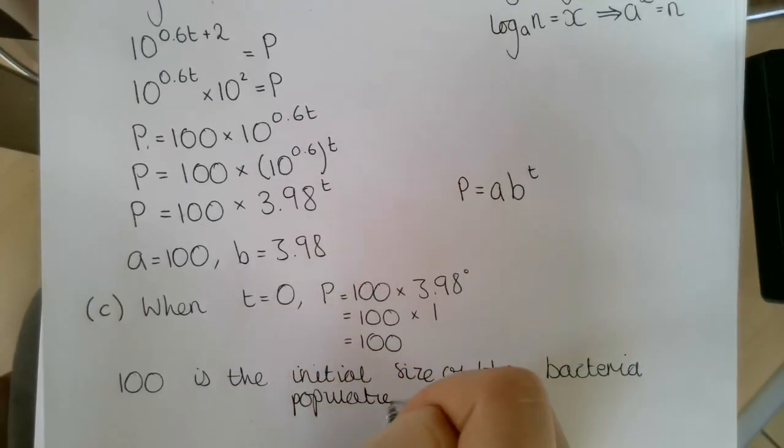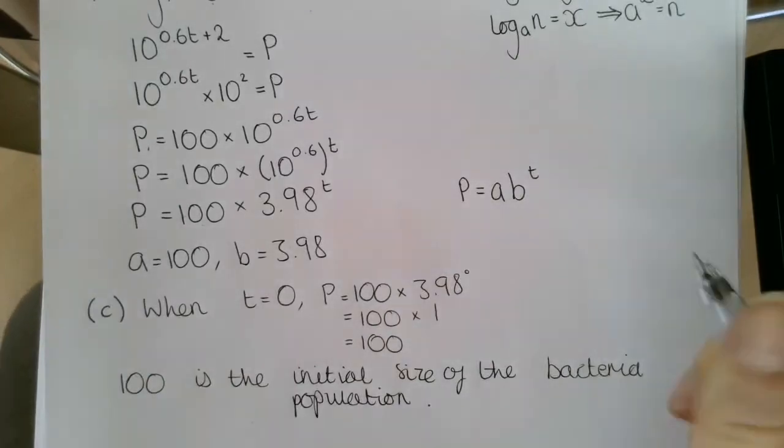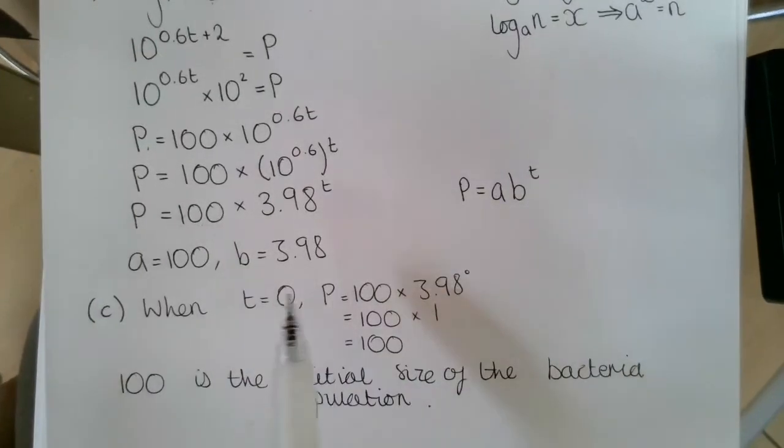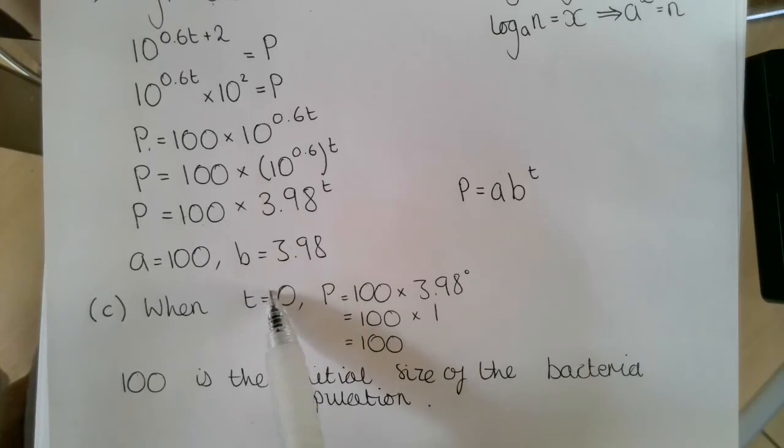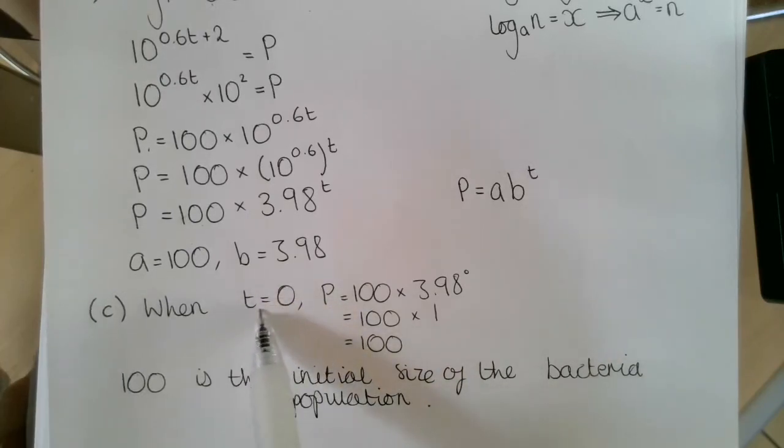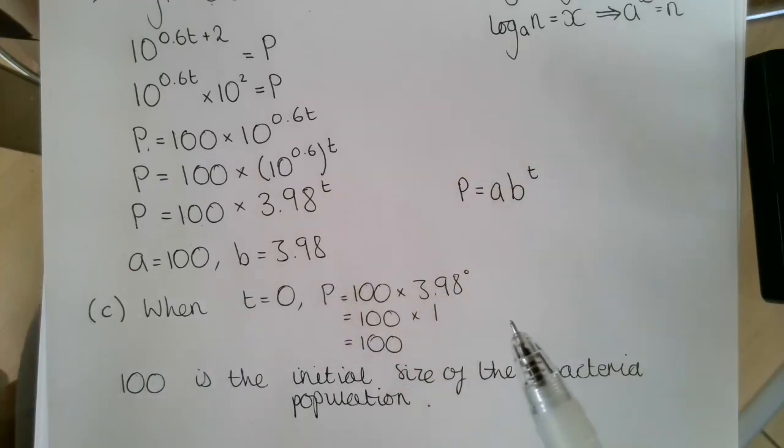Remember, we discussed this in a previous lesson about modeling, that when you are asked to interpret one of the values, always try and see what that initial value is. When you put in, when you substitute in t equals 0, find out what that means in terms of the value you are being asked to discuss.